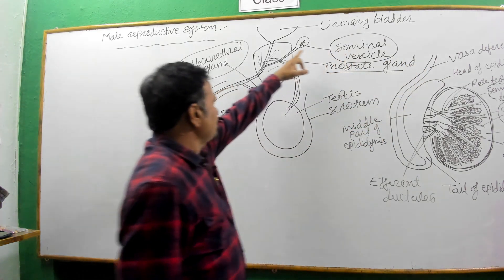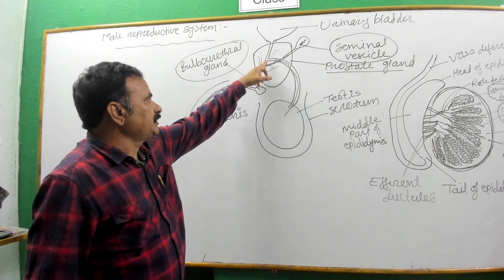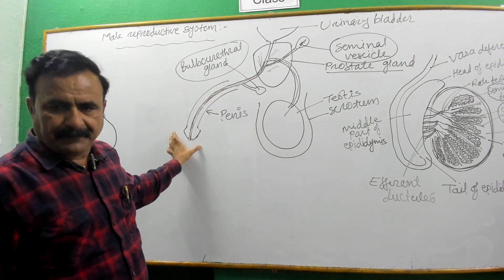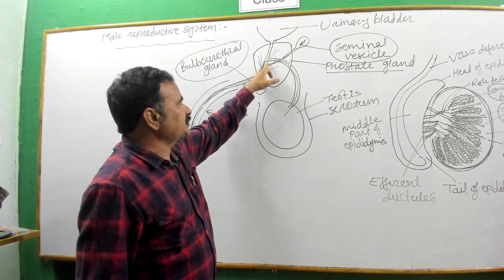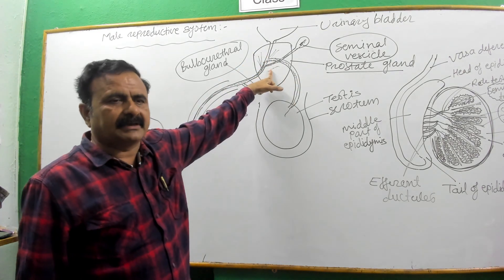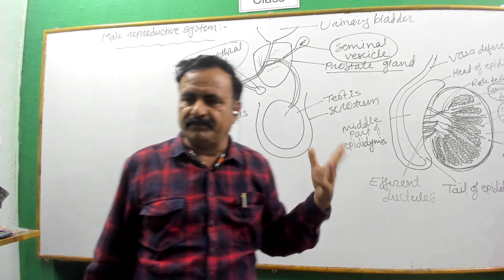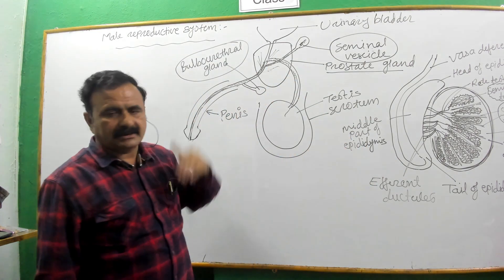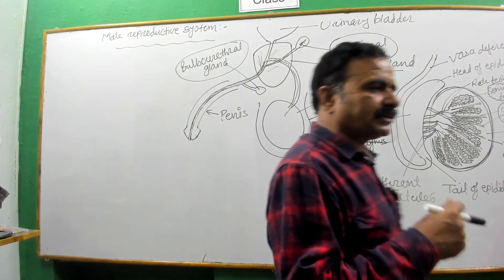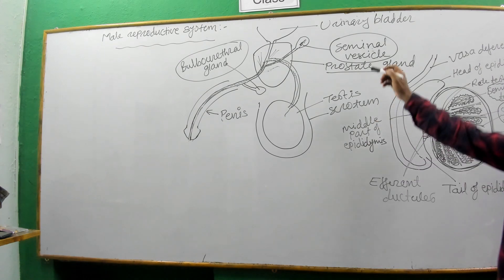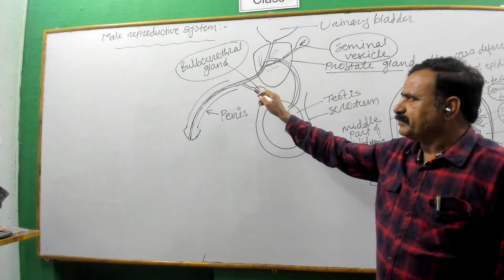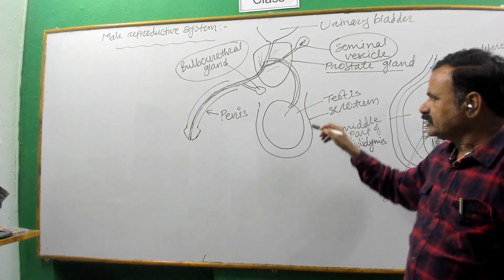The vas deferens is connected to the urinogenital part passing through the penis. As it comes to this region, a large leaf-like gland is present called the prostate gland. In the male reproductive system there are three glands: the seminal vesicle, the prostate gland, and the bulbourethral gland.